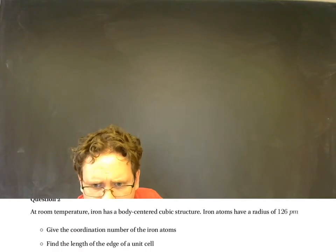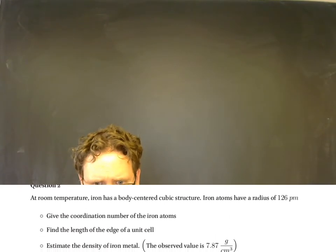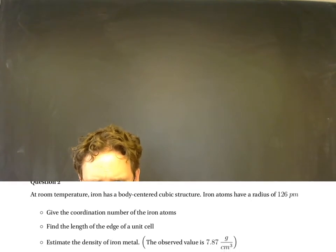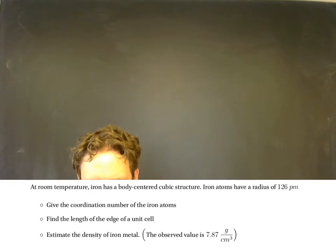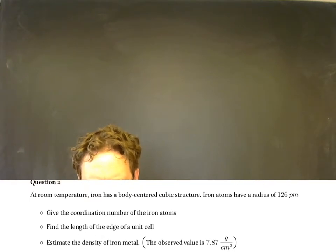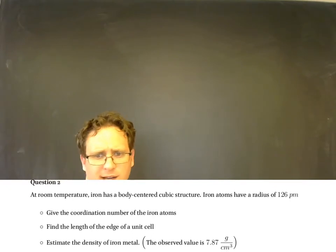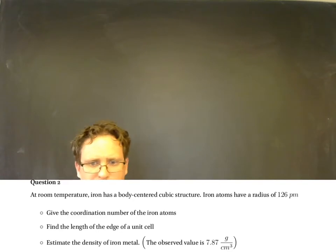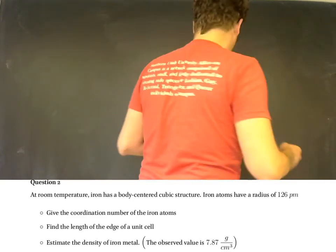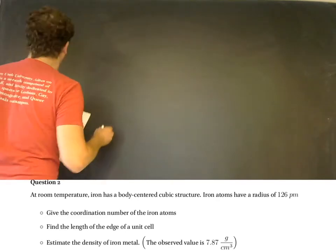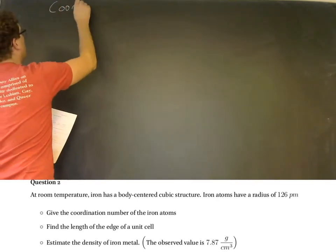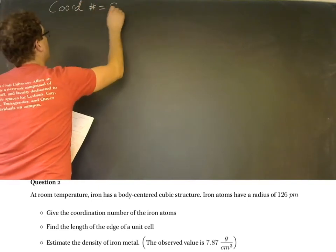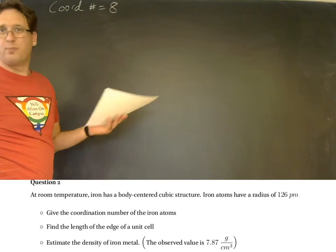Okay, so let's move on down here to question two. We're going to need a lot of board space but I think we can fit it all on here. So question two says at room temperature iron has a body centered cubic structure. And iron atoms have a radius of 126 picometers. Let's give the coordination number of iron atoms. So for a body centered cubic structure the coordination number is eight. And that's just for all body centered cubic.